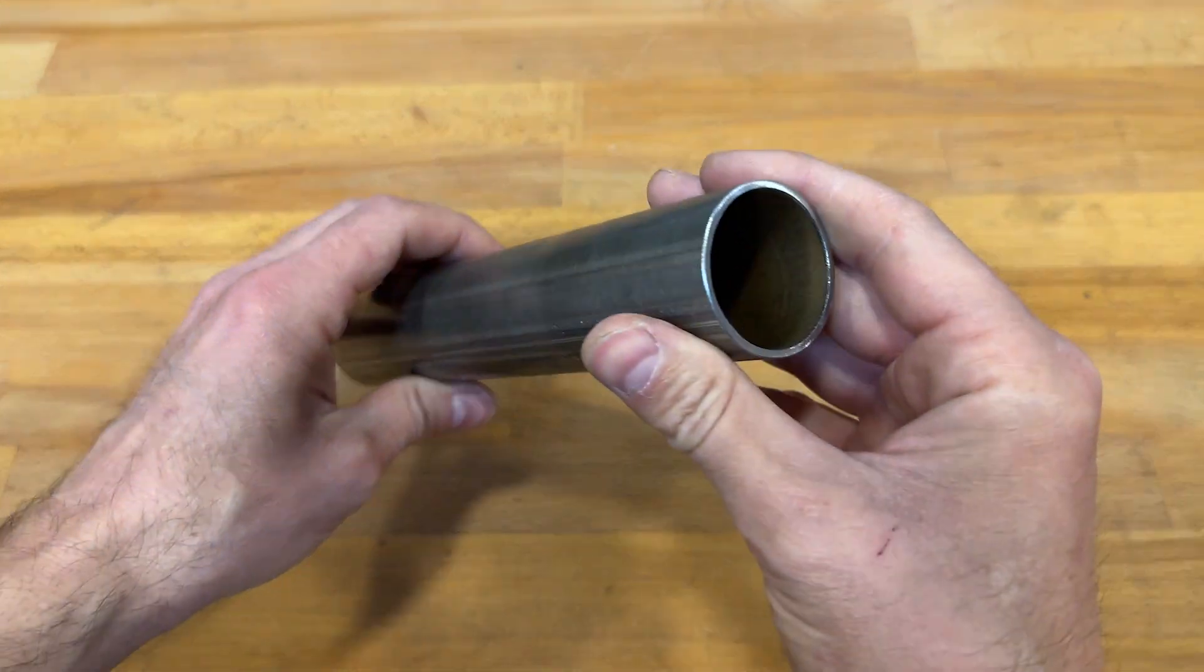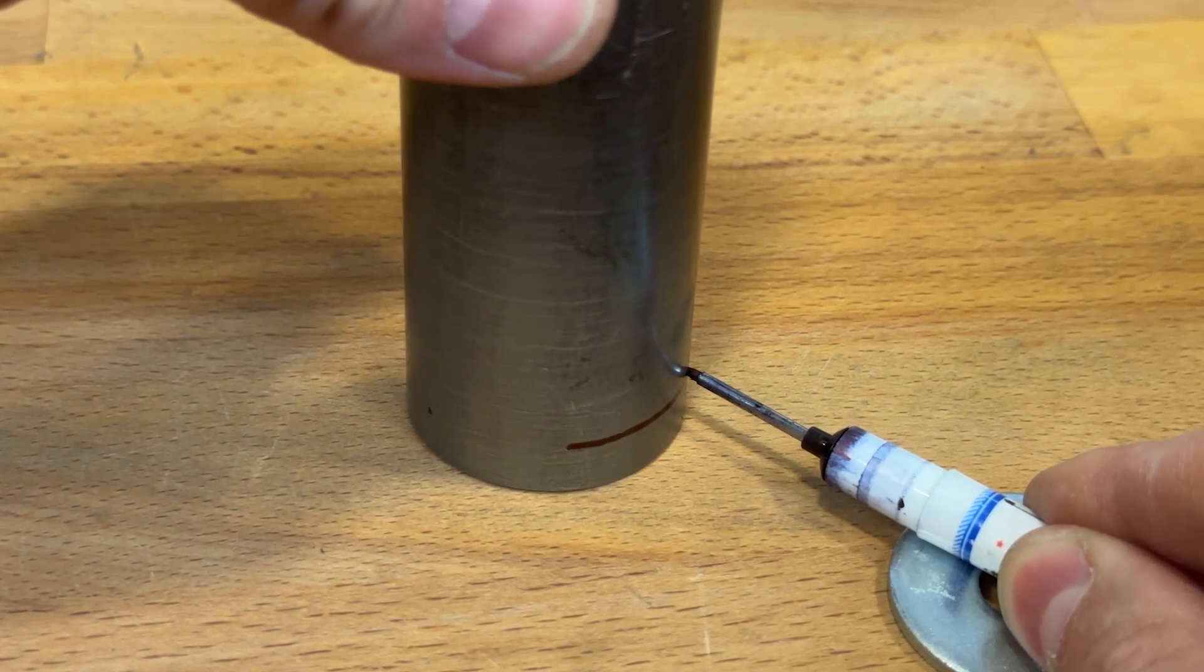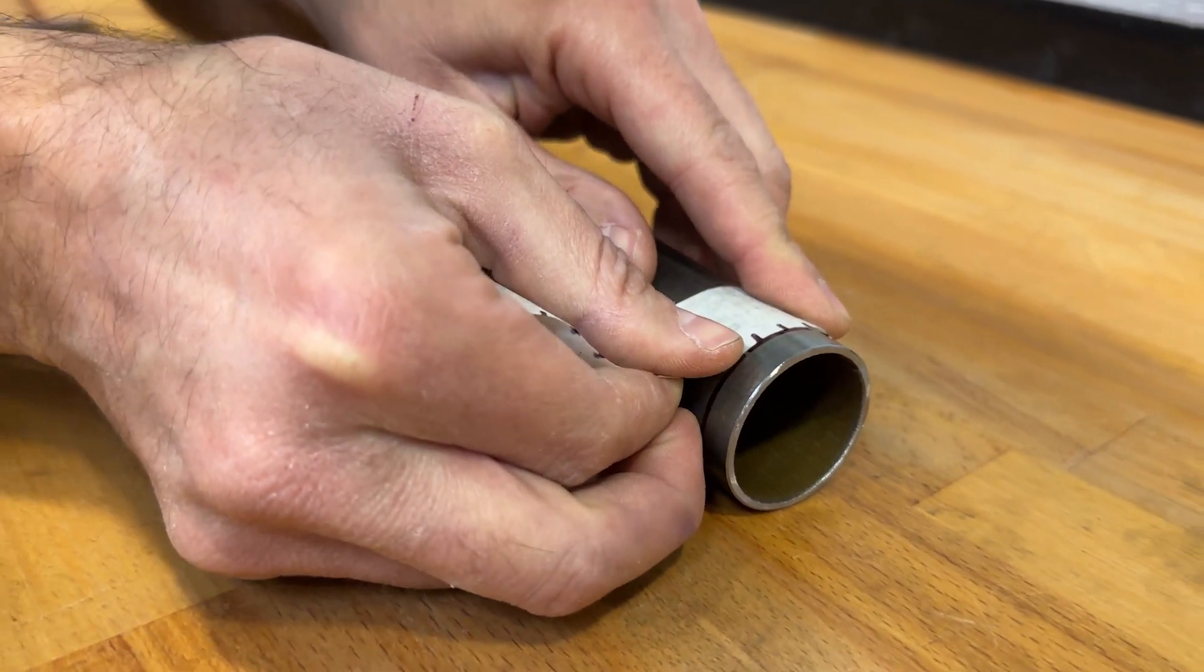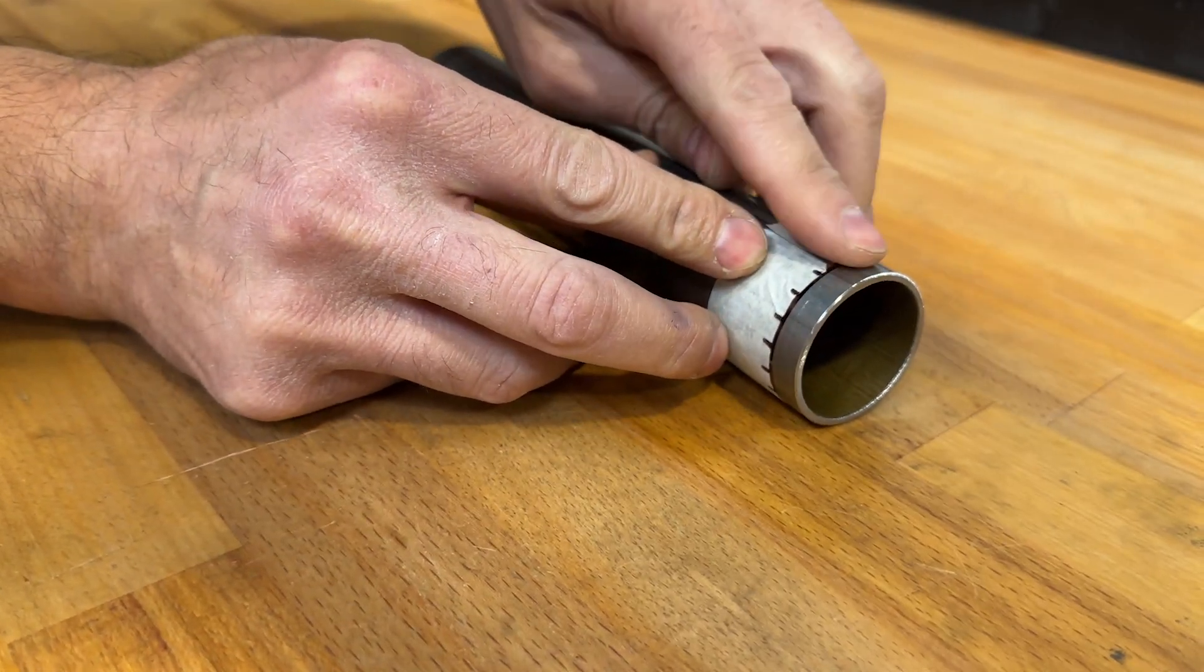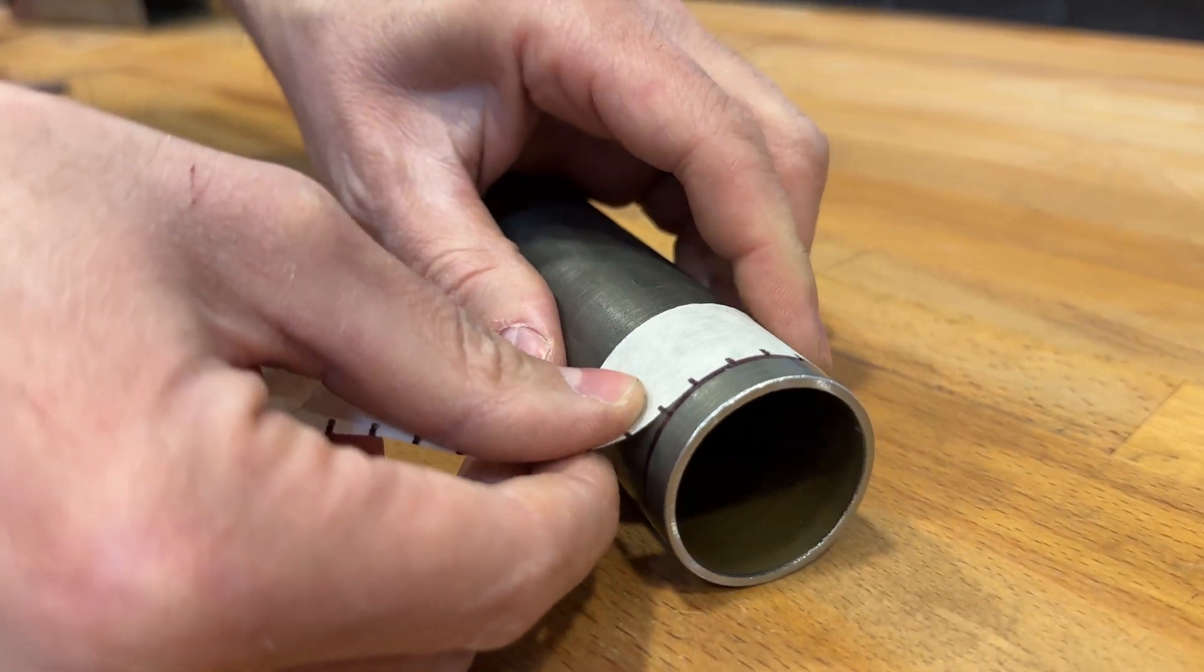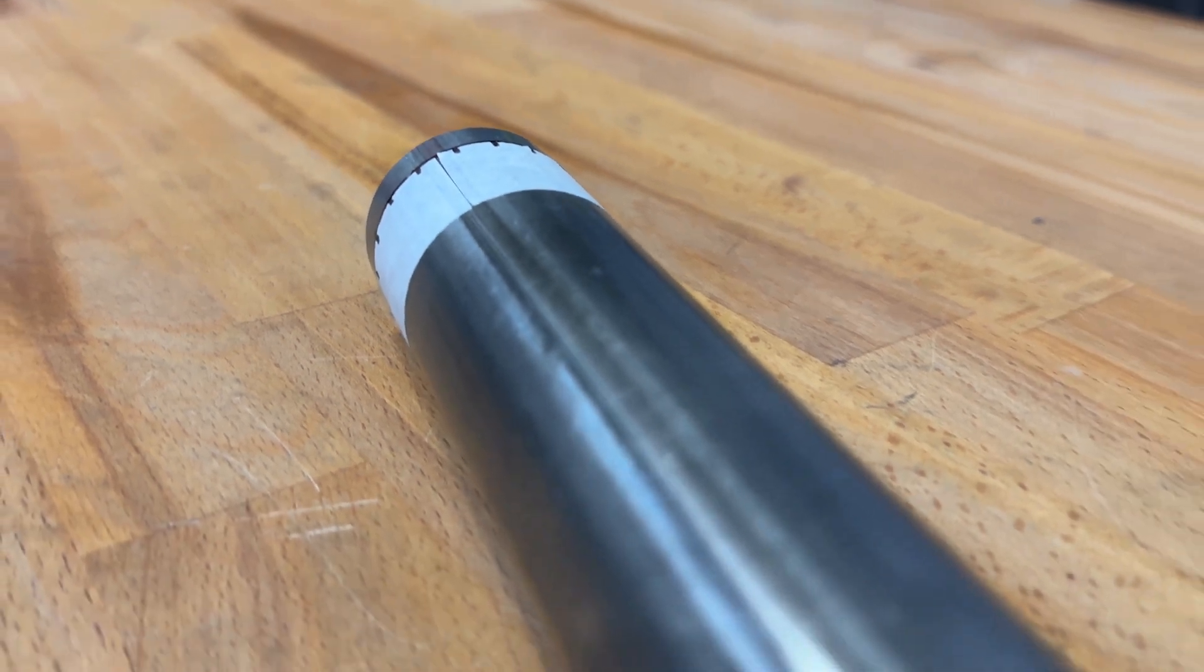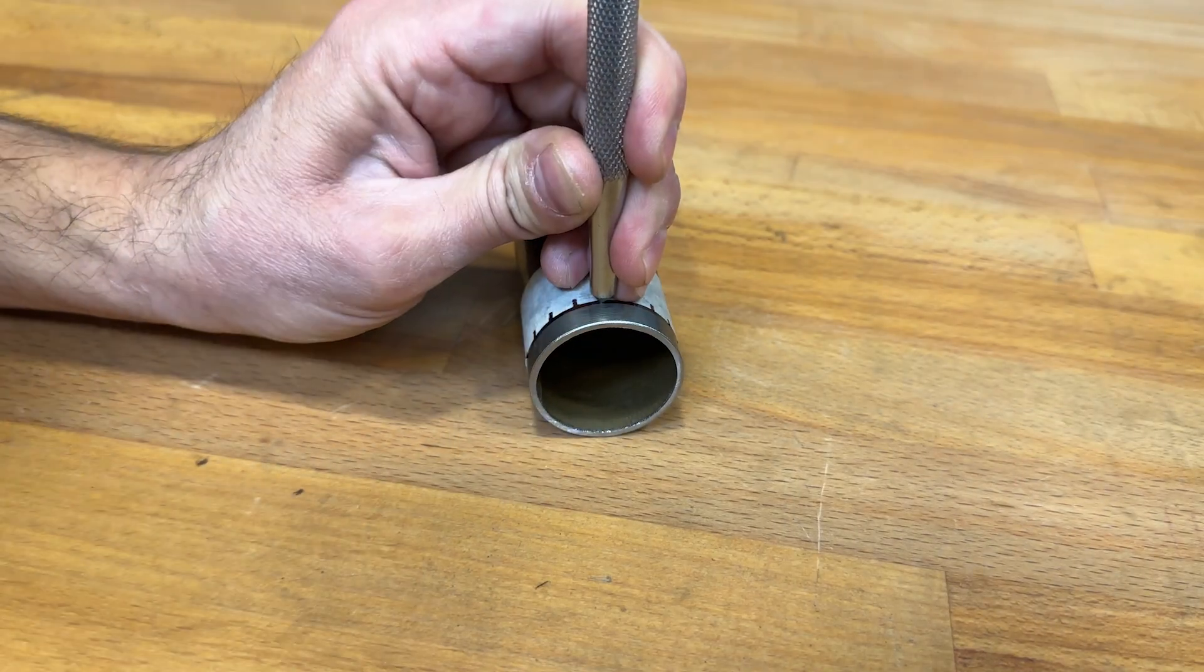We'll also need a 35mm diameter iron pipe. We'll draw a line at each end about 6mm high. And with this template, we'll mark the points where we'll drill. We repeat the process on the other end of the pipe. And we mark all the trace points.